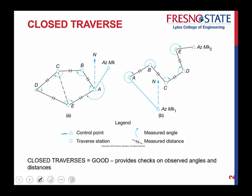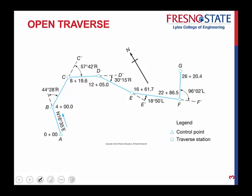Closed traverses provide a check on all our observed angles and all our measured distances. That's what's really important when we get into surveying and control networks — anything we have to rely upon to build or design something requires this sort of check.